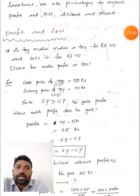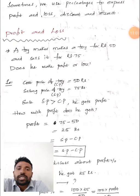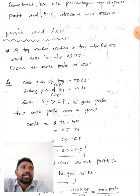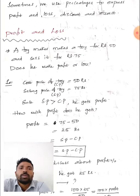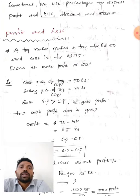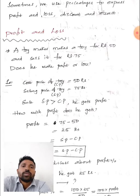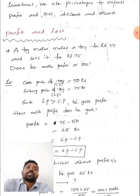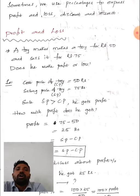We generally use percentages to find profit and loss, discount, and sometimes interest. For example, when you go to a shopping mall, they might say 2% or 3% discount — meaning they are decreasing the value by that percentage. Now let us discuss percentages in the context of profit and loss.